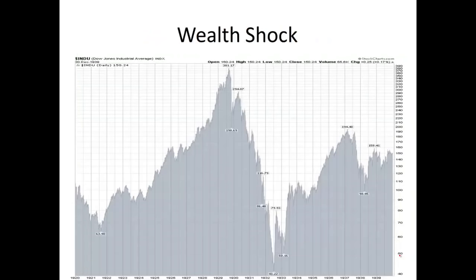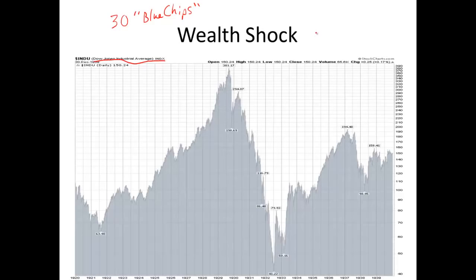First, we might identify what we call a wealth shock — this is the popular tale of what started the Great Depression: the stock market crash in 1929. What we're looking at here is the Dow Jones Industrial Average Index, probably the most familiar stock market index. It tracks 30 of the biggest, strongest, most stable companies — sometimes called blue chips — in the country.